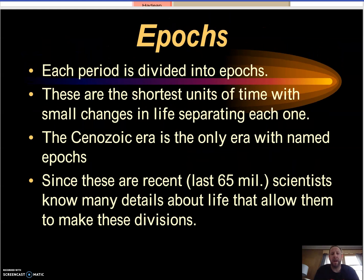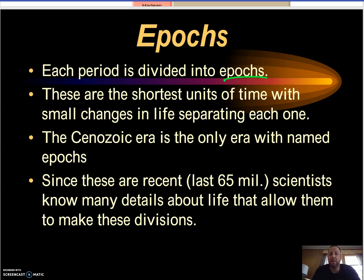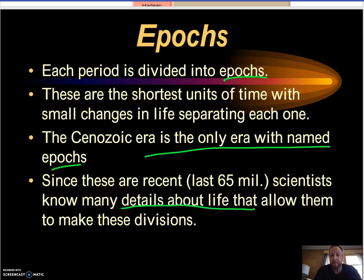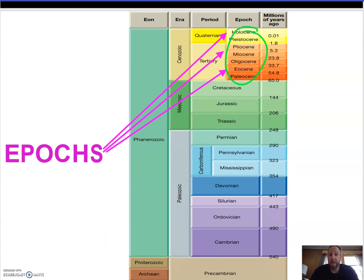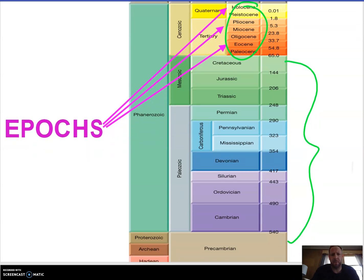Breaking down periods into epochs: if you look on the reference tables pages 8 and 9, the epochs in the Paleozoic and Mesozoic are labeled simply as early, middle, and late. When you get up into the Cenozoic it gets really specific, because the information in the Cenozoic is still around. The Cenozoic is the only one with named epochs, because details about life can be very specific and that information is still with us. For the others, you'll just see each piece has an early, middle, or late — not too difficult.